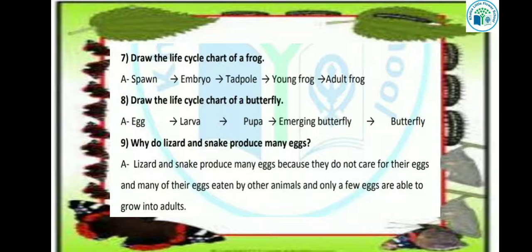Now kids, our next question is: why do lizard and snake produce many eggs? Lizard और snakes बहुत ज़्यादा अंडे देते हैं. Lizard and snake produce many eggs because they do not take care of their eggs. Many of their eggs are eaten by other animals and only a few eggs are able to grow into adults. तो जब lizard या snake अंडे देते हैं, तो वो अपने अंडों का ध्यान नहीं रखते, इसलिए दूसरे animals अंडों को खा जाते हैं. कुछ ही eggs survive करके adults में grow हो पाते हैं. इसी वजह से lizards और snakes ज़्यादा eggs देते हैं.